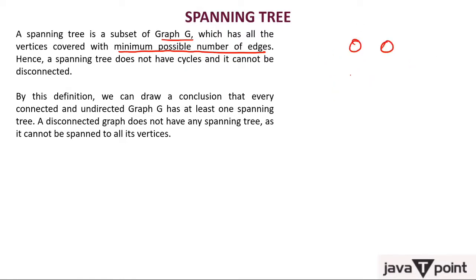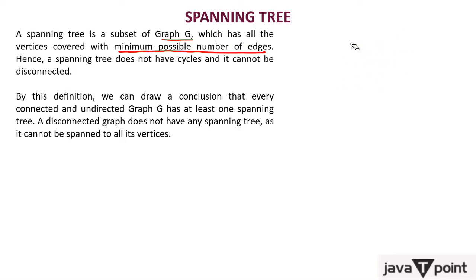But in a graph, is it something like that? No. A graph can have either equal or more edges — any number of edges compared to its vertices. Hence a spanning tree does not have a cycle.